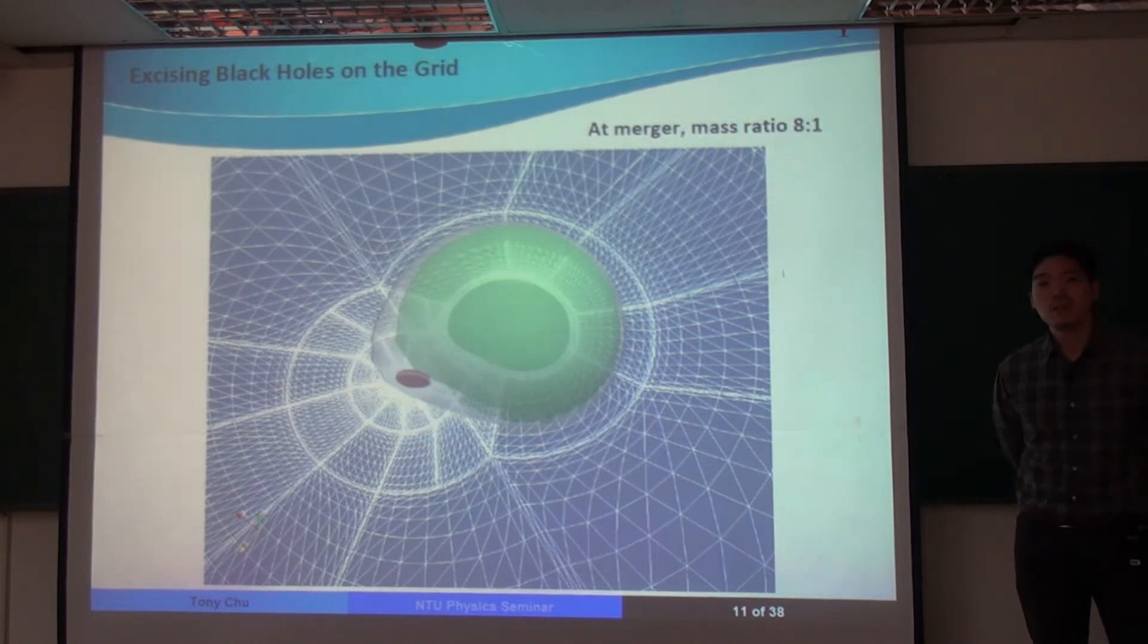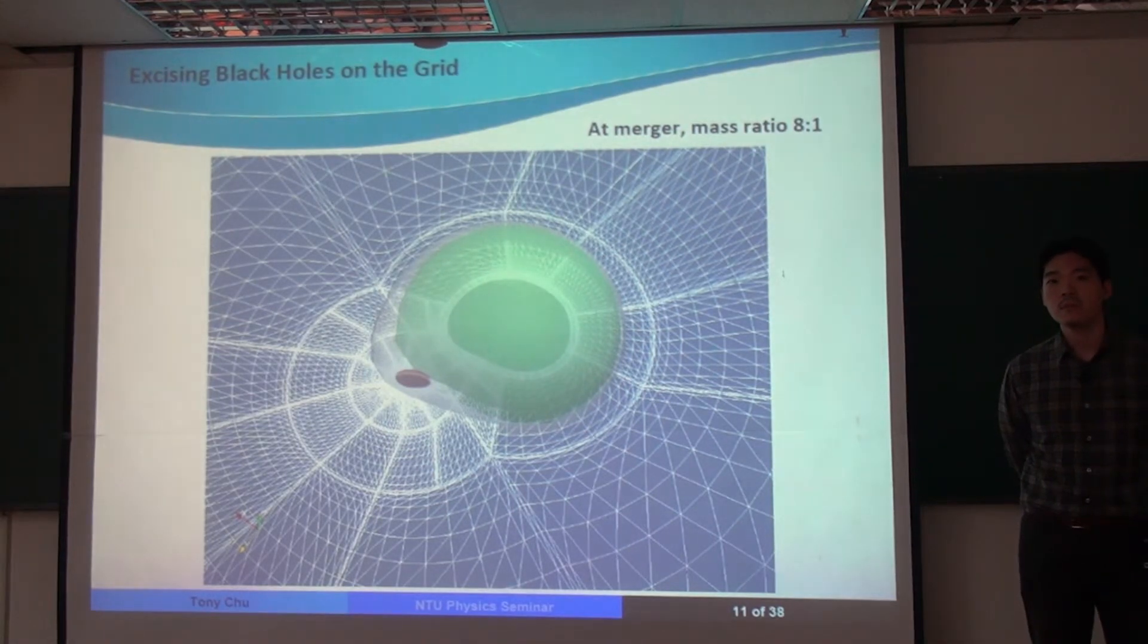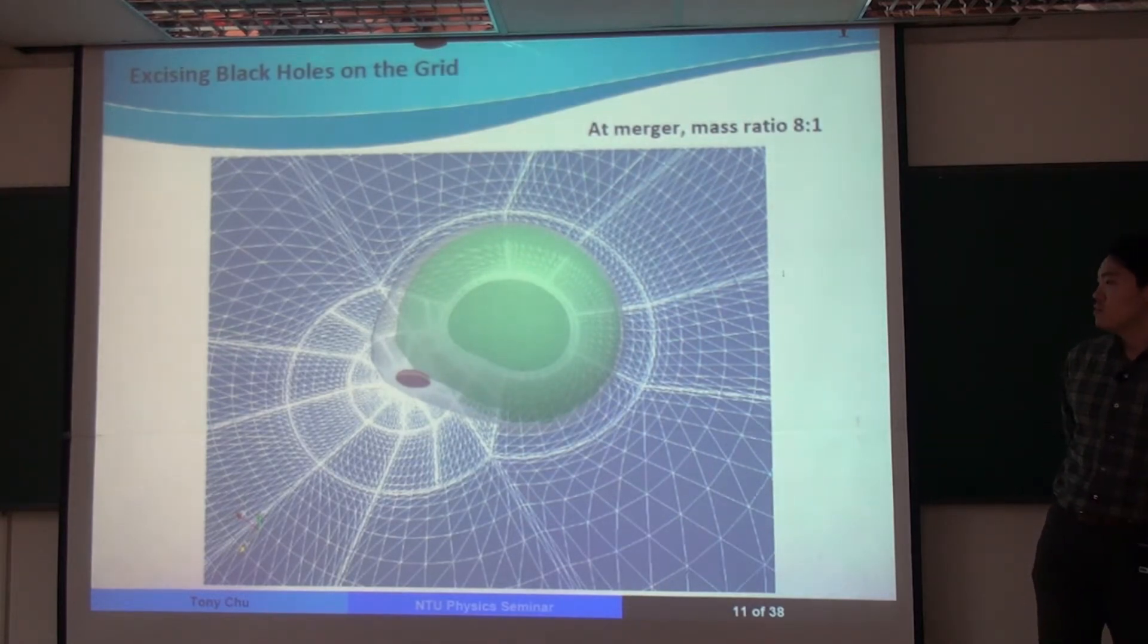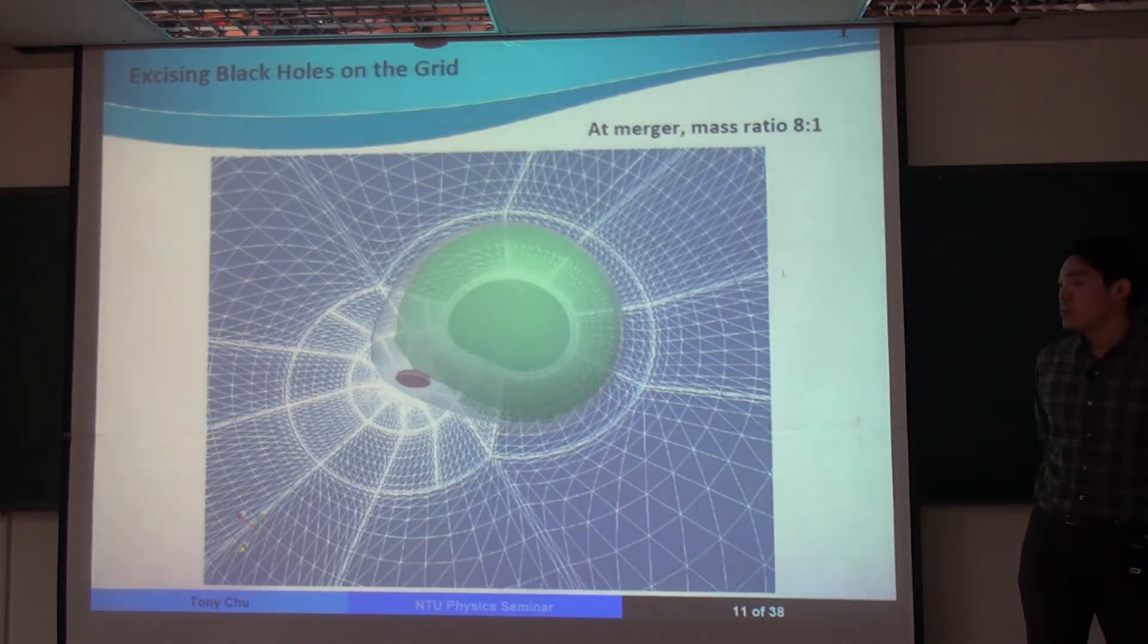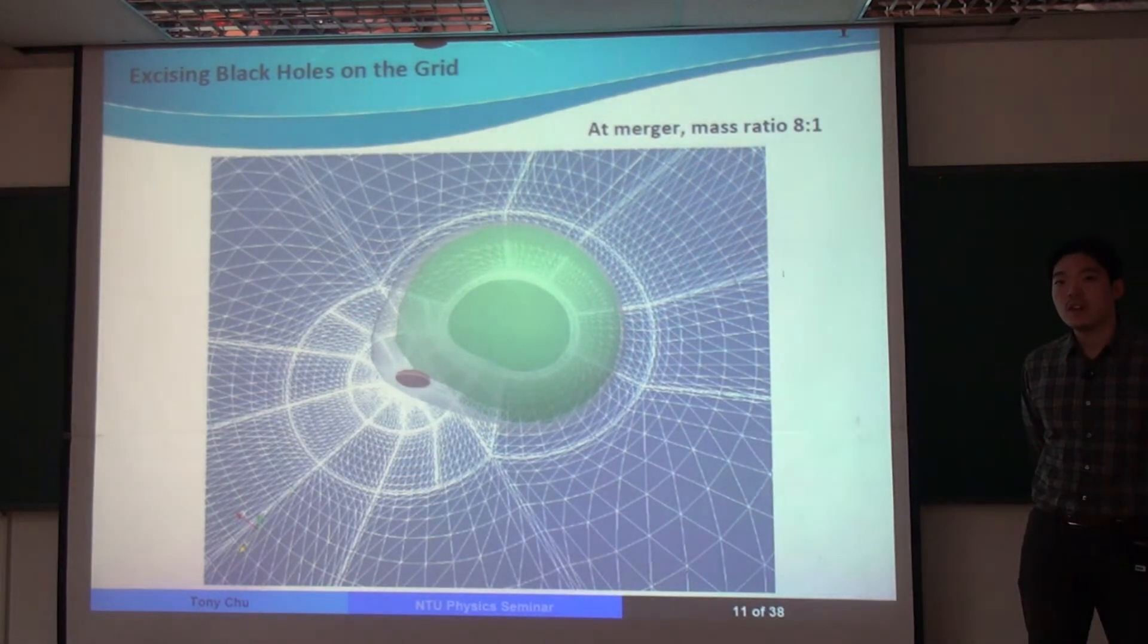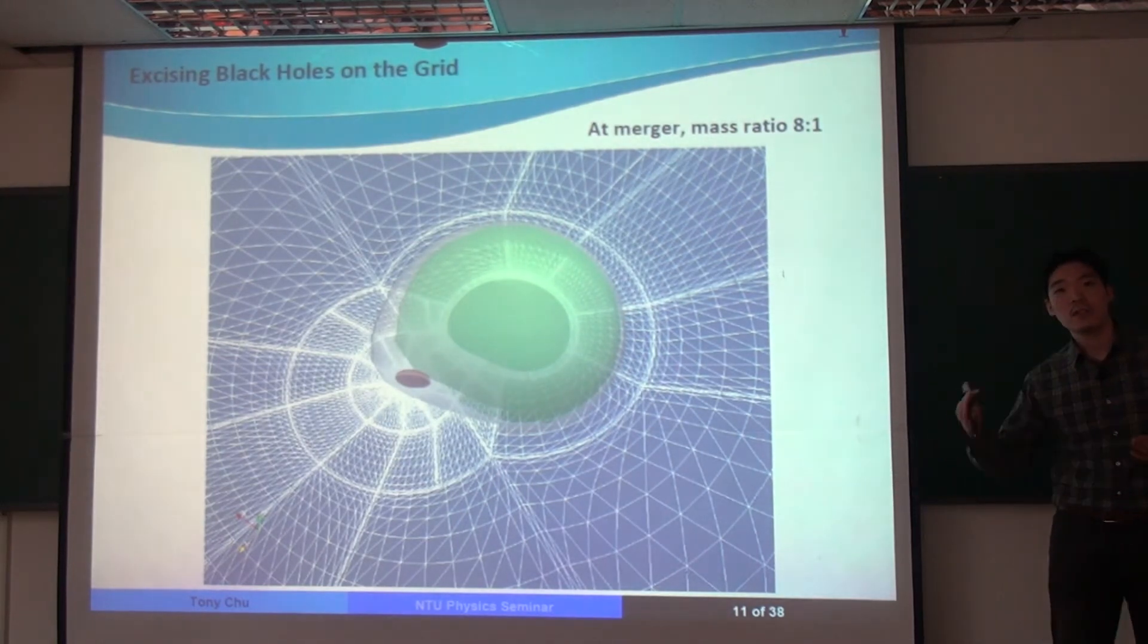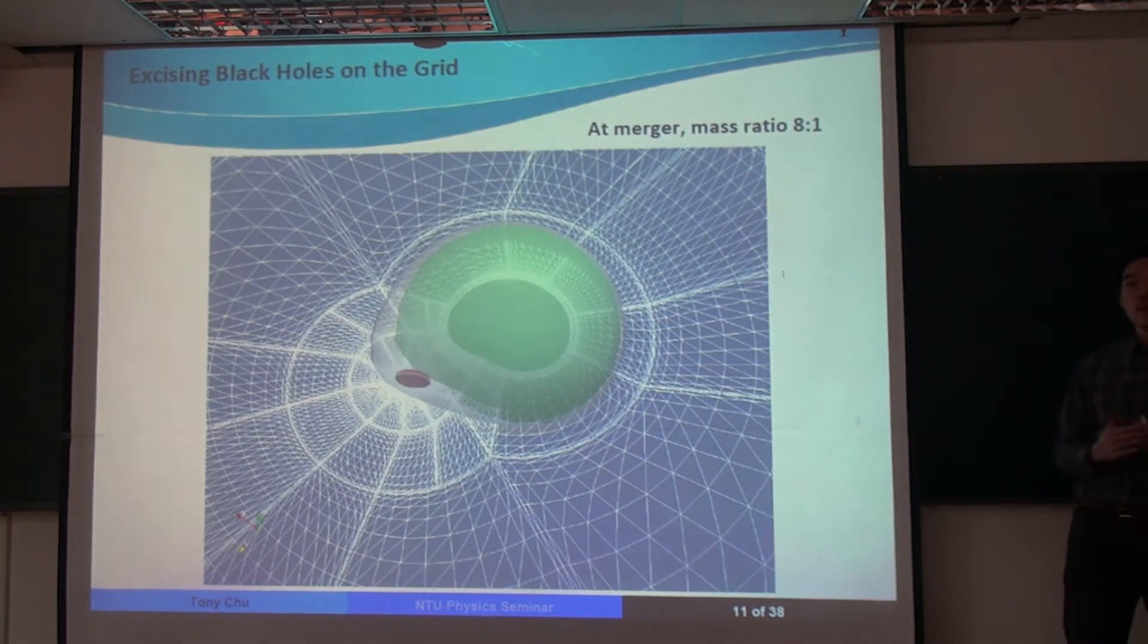So the question is about the spectral method. How do you choose the basis? So we choose, for the radial direction, we choose what we call Chebyshev polynomials. And for angular directions, we can choose spherical harmonics. So we use different basis functions in different spatial directions.